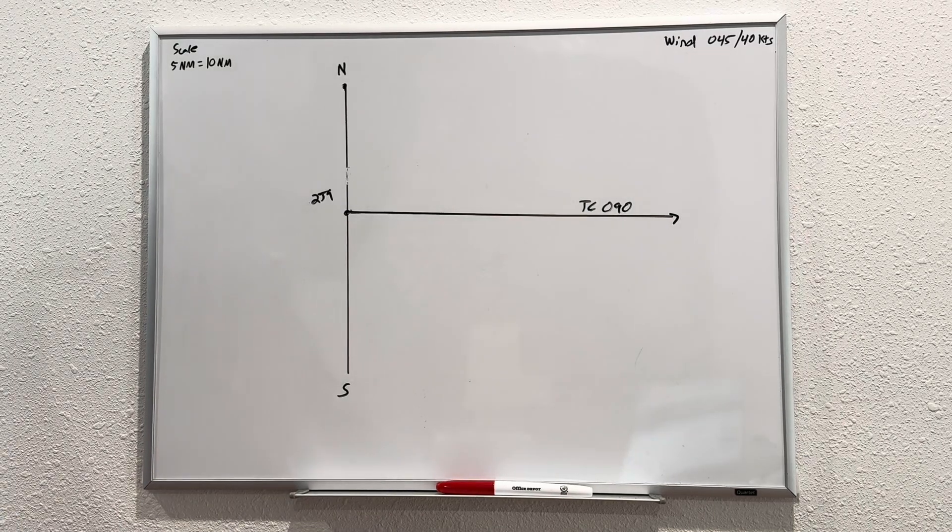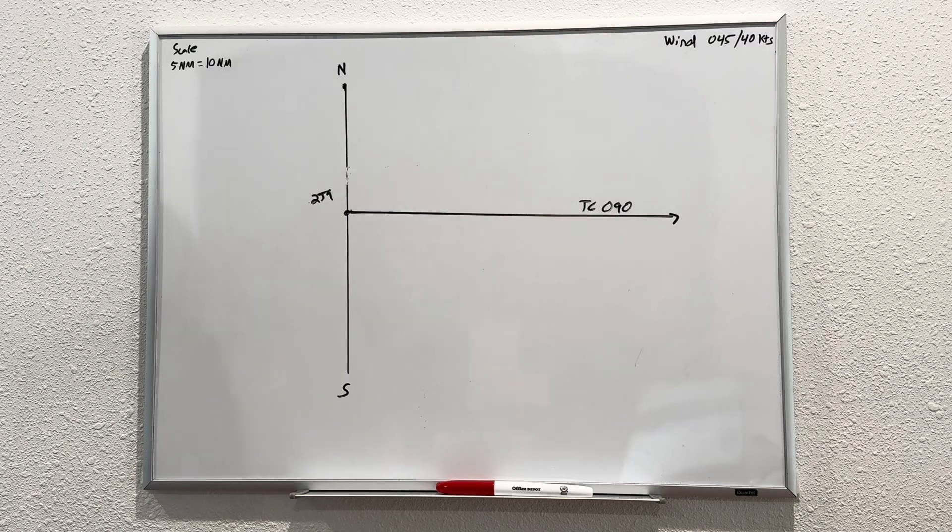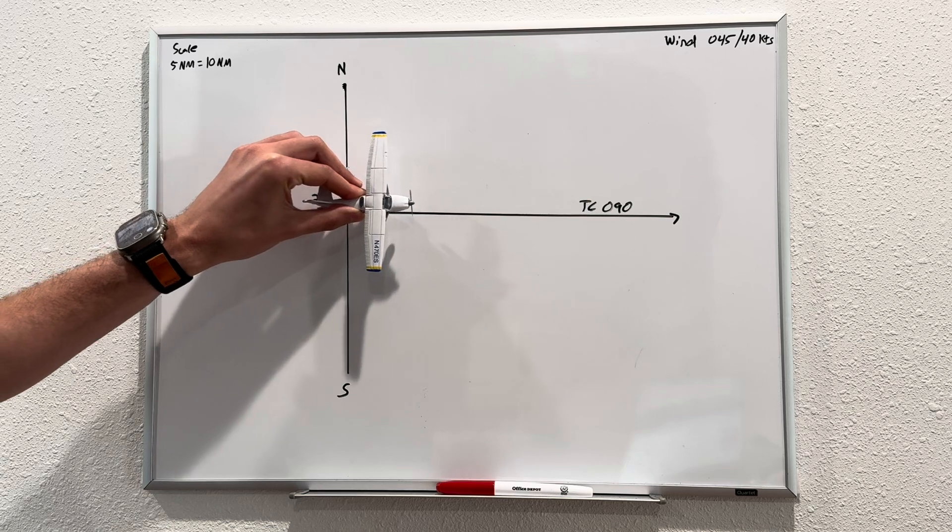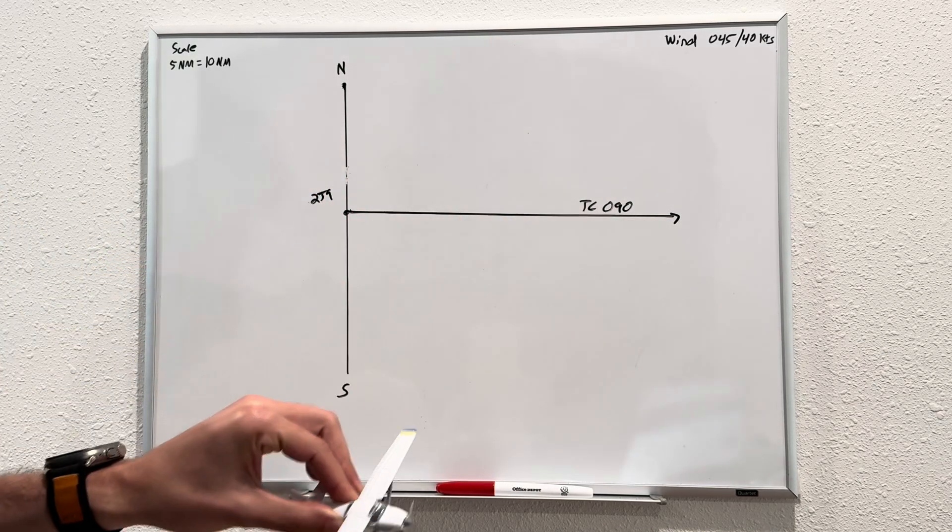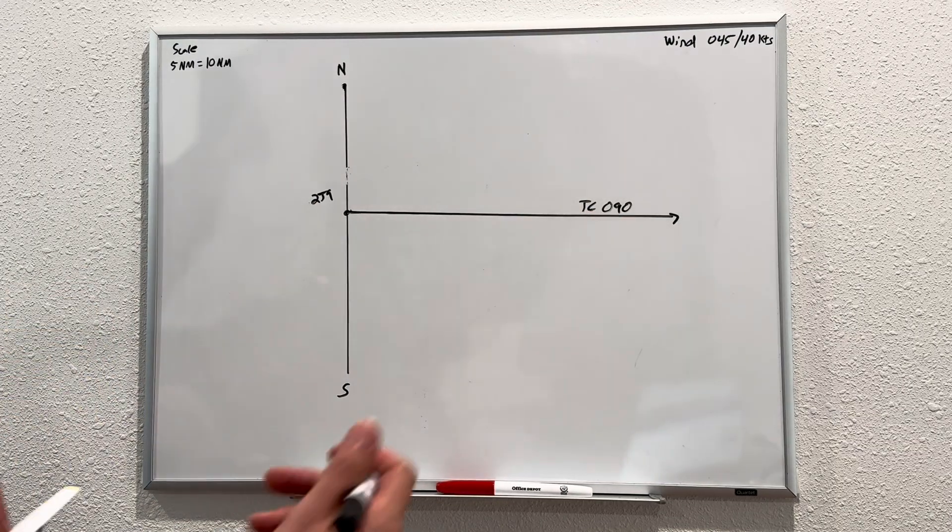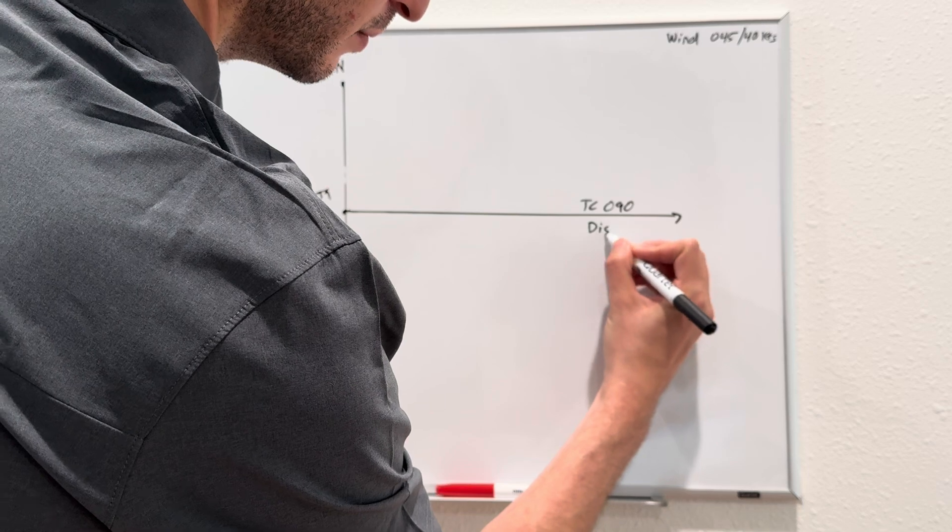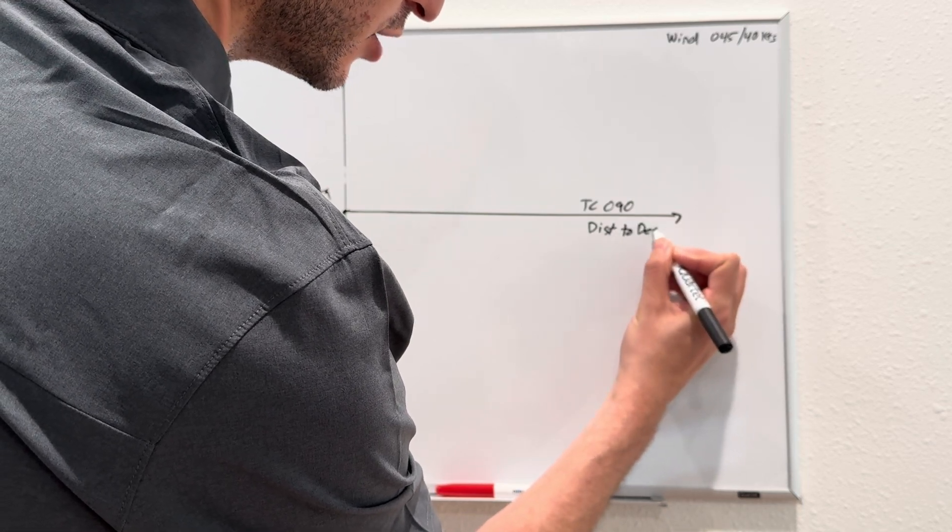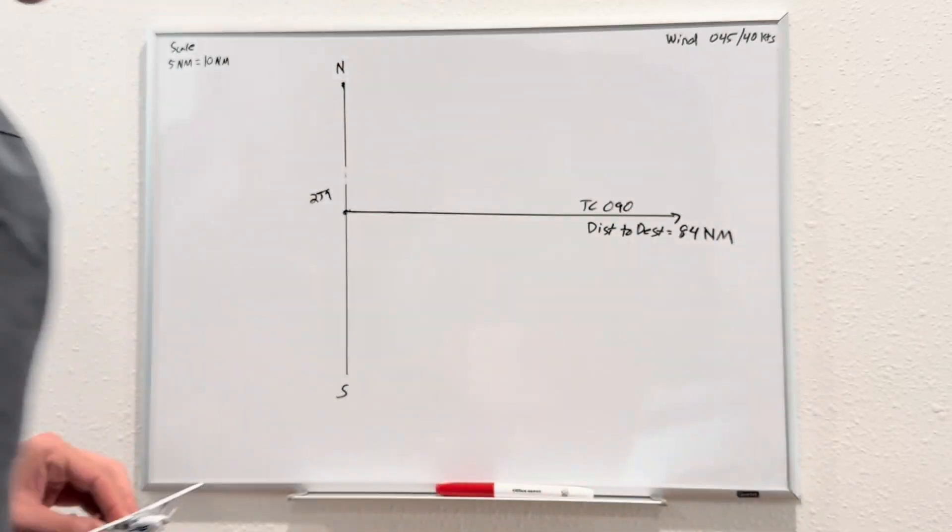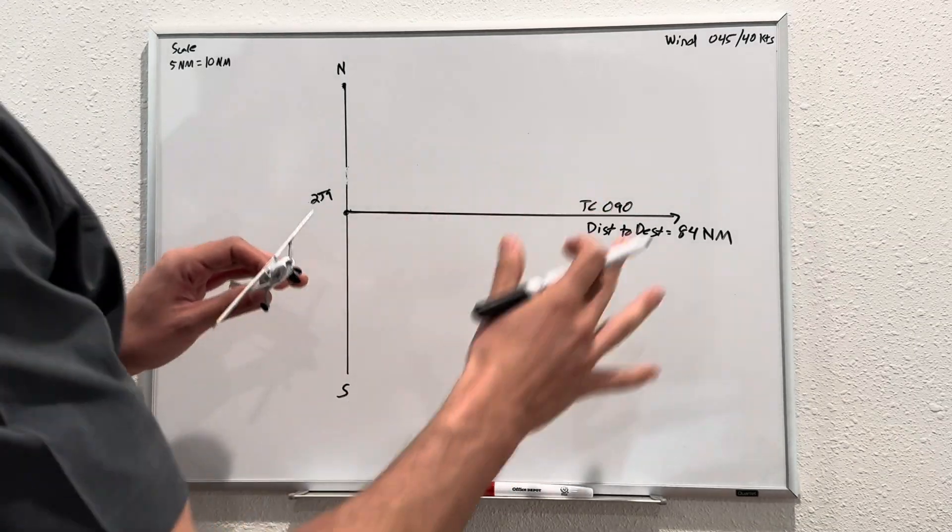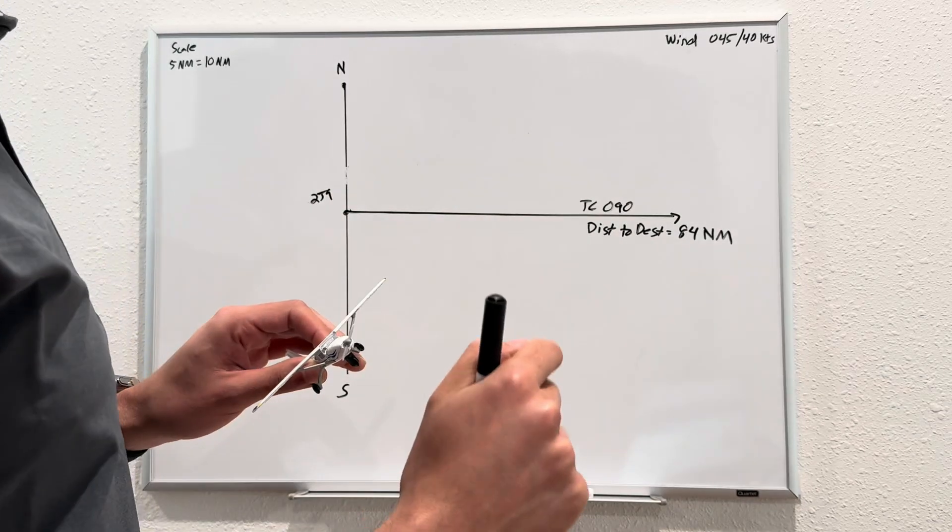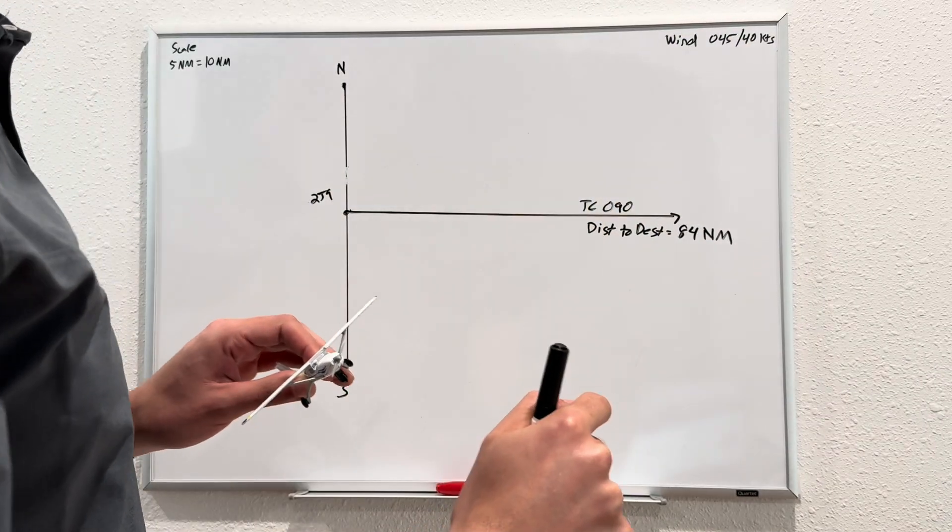Now, what do you think our next step is? If we had no wind, we could actually depart Quincy, follow our compass heading of 090, and we would eventually cross over Baker's Mill. Our distance to destination is 84 nautical miles. But back to my point, there's always going to be wind. You're never going to fly without wind.